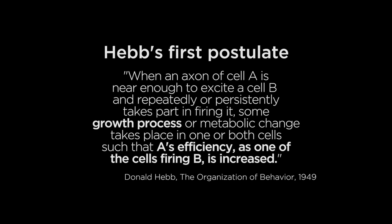In his first postulate, Hebb proposed that when an axon of cell A is near enough to excite a cell B, and repeatedly or persistently takes part in firing it, some growth process or metabolic change takes place in one or both cells, such that A's efficiency as one of the cells firing B is increased.